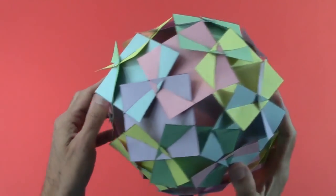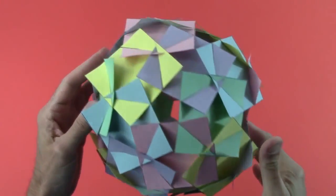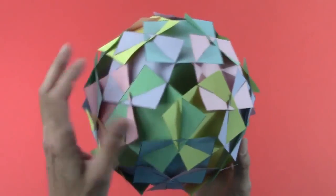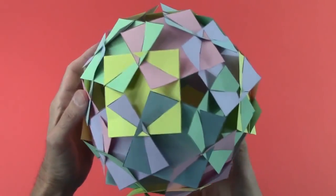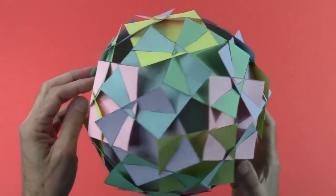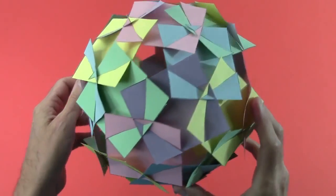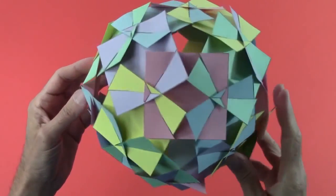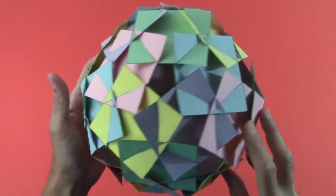This next one is made of 30 squares. There are five colors, arranged so all five appear around each star. Again there are small triangles where the parts overlap each other at the three-way intersections. It's very important to assemble those little triangles correctly, as they keep everything from falling apart.